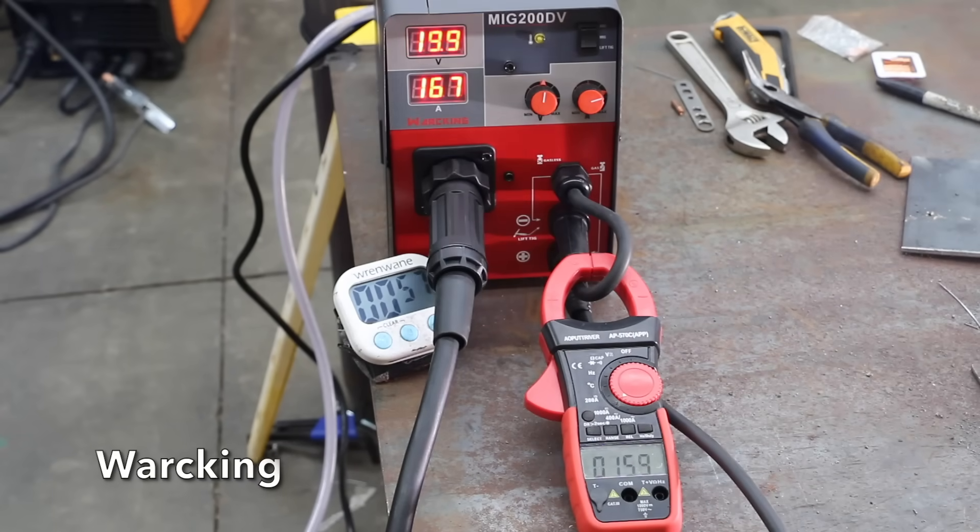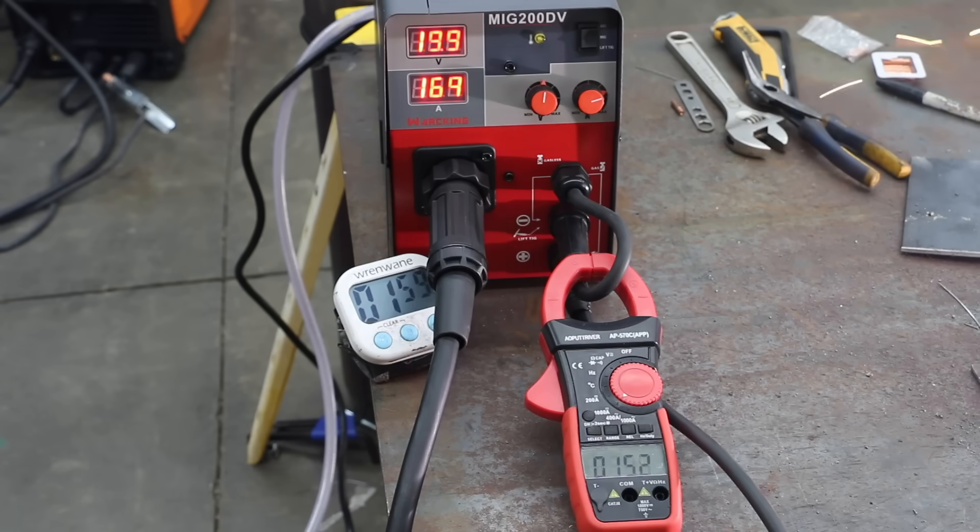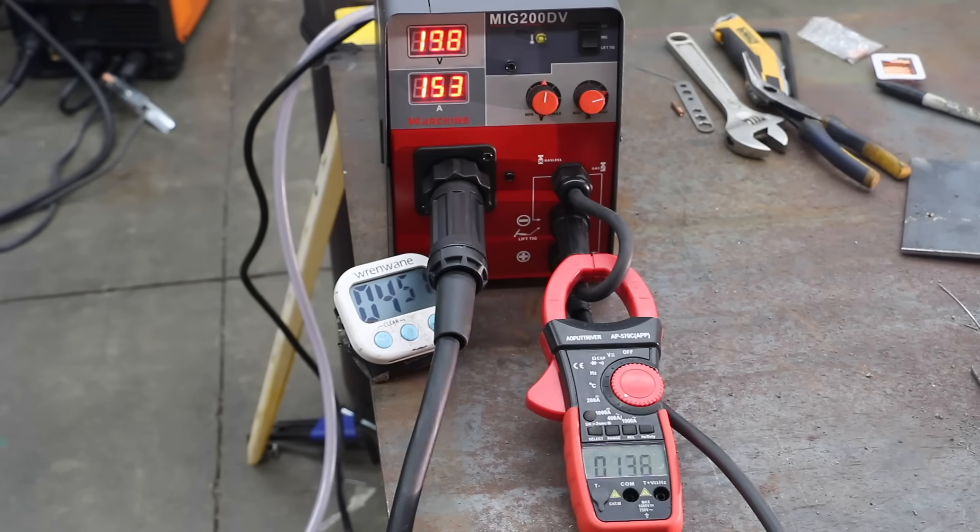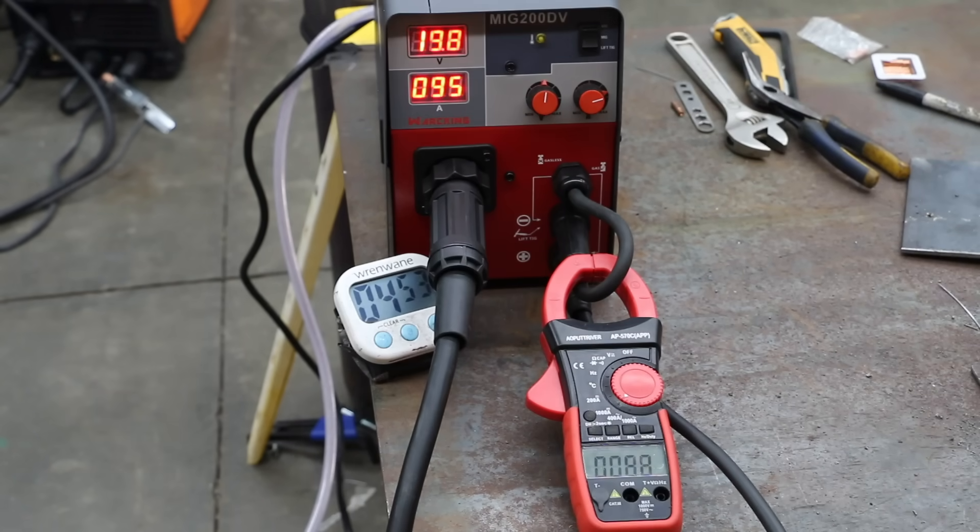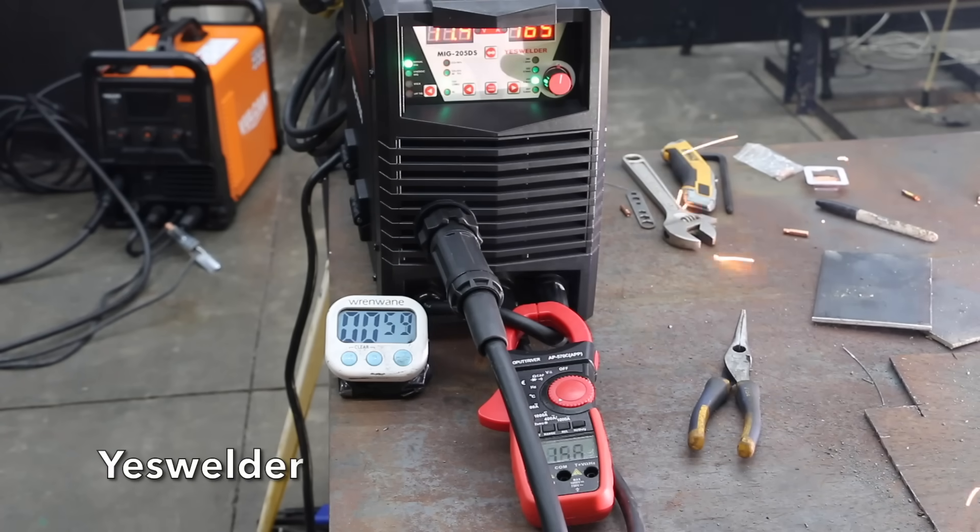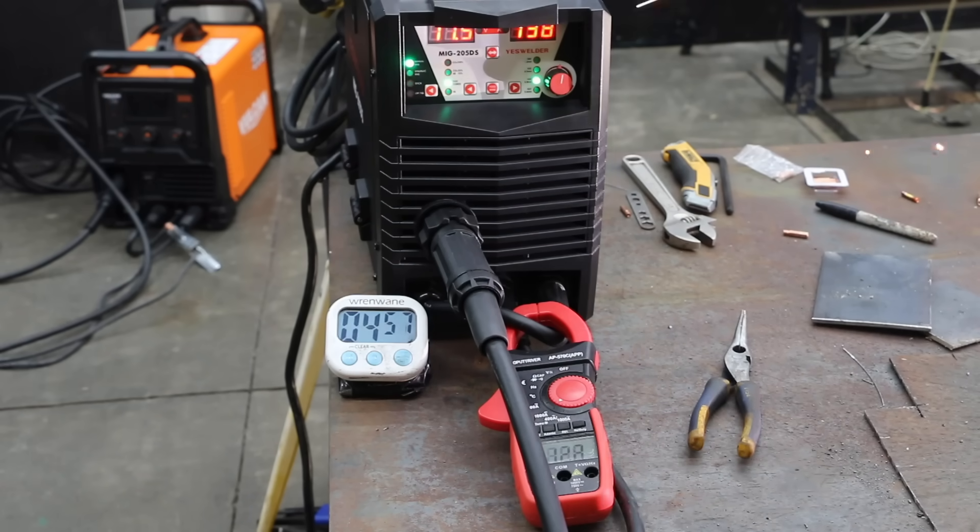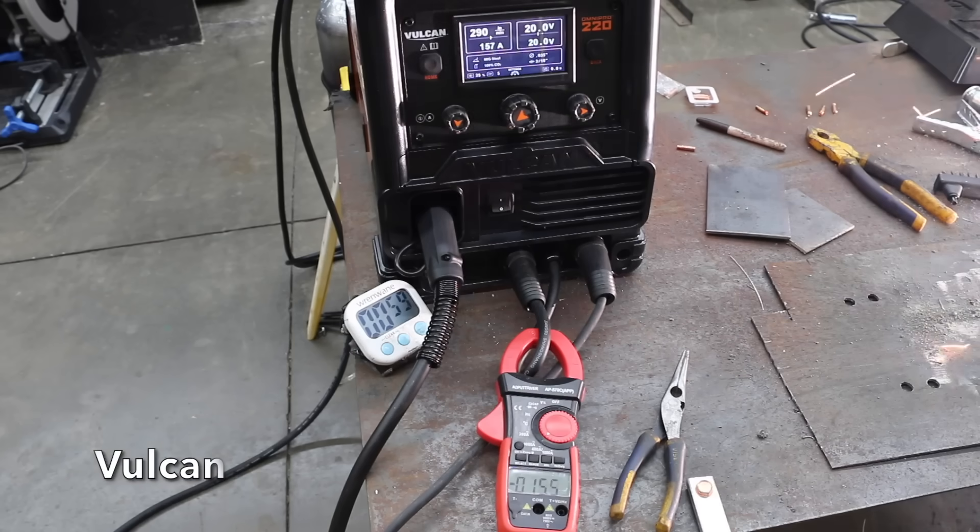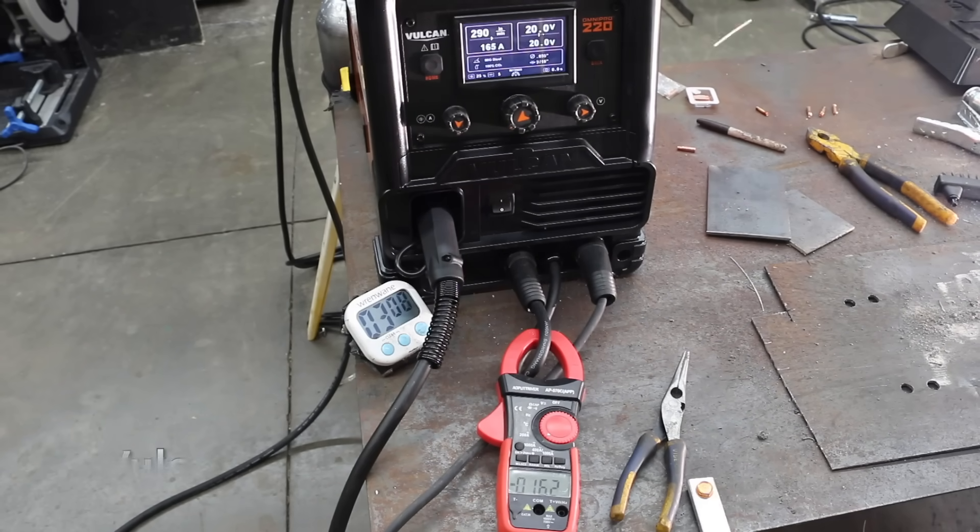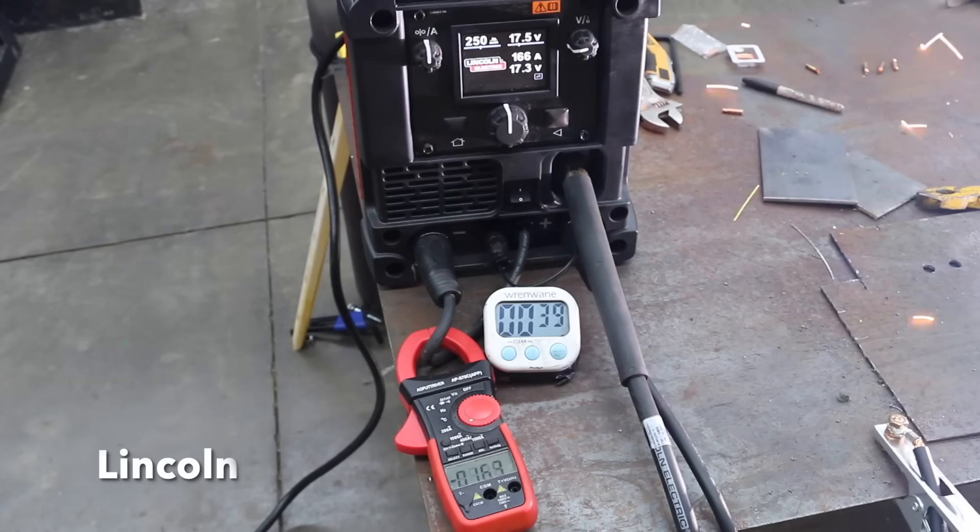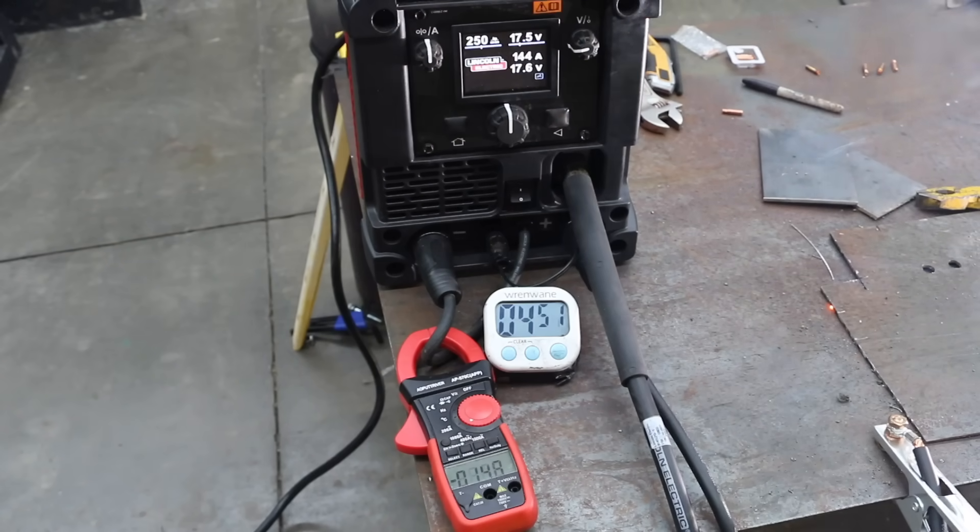And the War King started off strong and remained around 160 amps for the first two minutes. After three minutes, it was down a little to 155 and 144 amps after four minutes. And the War King just couldn't quite finish the test at four minutes and 52 seconds. Just like the War King, the Yes Welder started off strong at 156 amps. It dropped around 147 amps at three minutes and finished at five minutes at 133 amps. And the Vulcan held on to 160 amps for the first three minutes and then dropped 144 amps for the final two minutes. The Lincoln started off at 160 amps and then dropped a little to around 145 by five minutes.